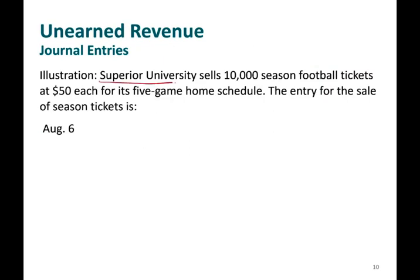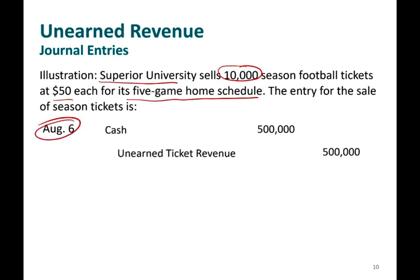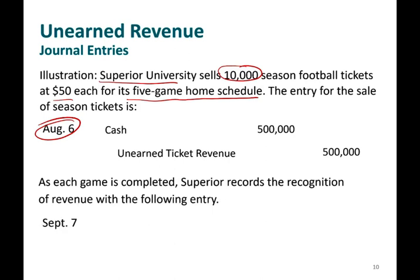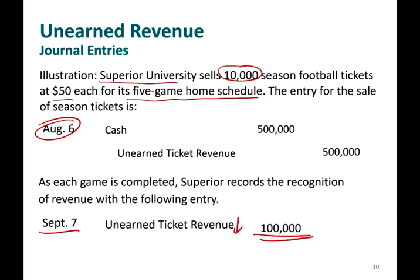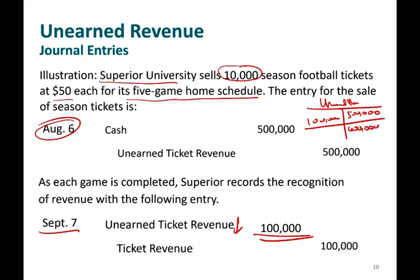For example, Superior University sells 10,000 season football tickets at $50 each for five home games — that's $500,000. When they sell the tickets in August, they debit cash $500,000 and credit unearned ticket revenue $500,000. As the team plays each game, they recognize revenue. On September 7th when they play the first game, they debit unearned revenue $100,000 — leaving $400,000 still unearned — and credit revenue $100,000. This continues for each of the five games.